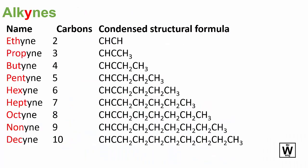Moving on to alkynes now. An alkyne is just a triple bond, so you've got this situation happening here. The stems follow the same pattern with '-yne' on the end: ethyne, propyne, butyne, etc.